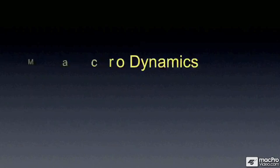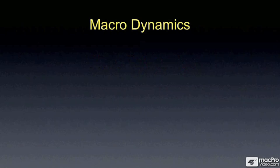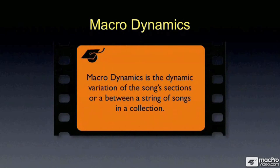When we think about mastering, we want to talk about dynamics in two different ways. The first way is called macro-dynamics — it's the big picture. What we have been talking about previously with compressors and limiters is micro-dynamics. And I'm going to explain how these two different types of dynamics work together. We're going to start with macro-dynamics, which is the dynamic variation of a song's different sections, or the difference in dynamics between songs together on a CD.